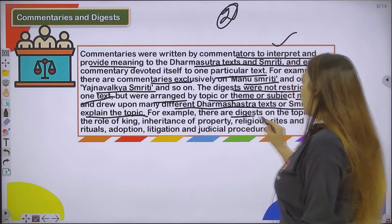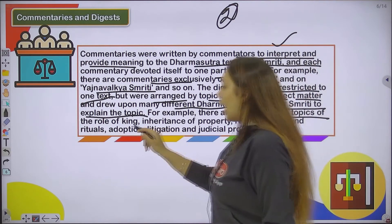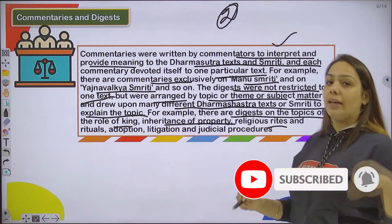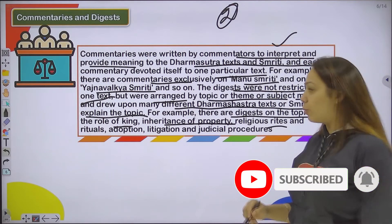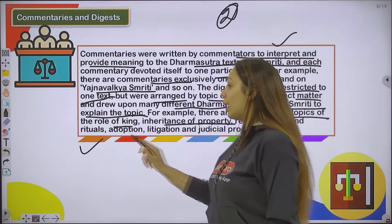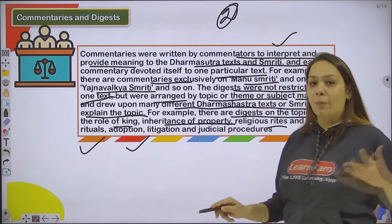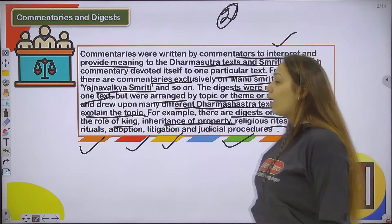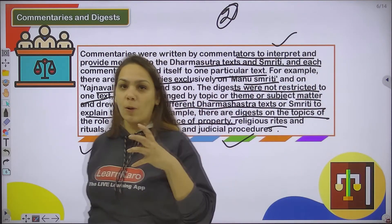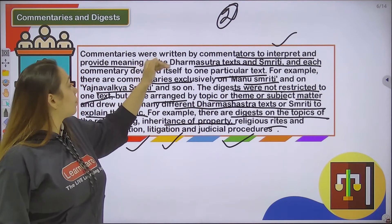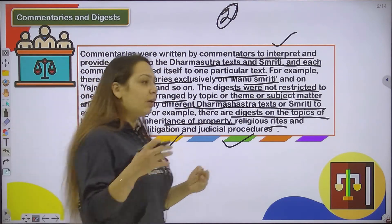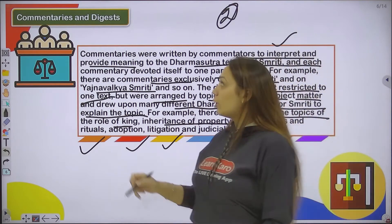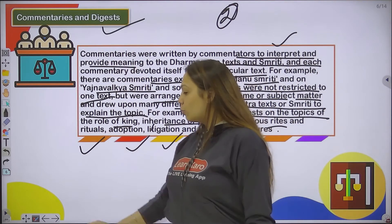For example, there are digests on topics such as the role of the king, inheritance of property, religious rites, rituals, adoption — how to adopt a child — and litigation or judicial procedures. These digests were used to deal with all these topics, unlike commentaries which exclusively talk about a single Dharm Shastra text. So that is the difference between commentaries and digests — a possible two-mark exam question.